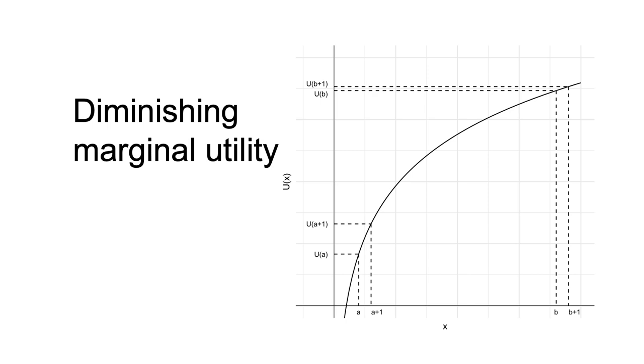The curve represents an indifference curve for the good x. The curve is concave, which means that the slope of the curve decreases in x and the marginal utility of each additional unit of good x decreases as you consume more of it.